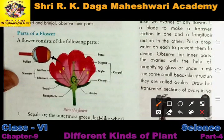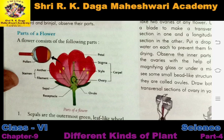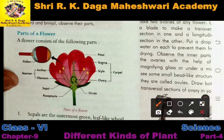Here a picture is given showing the parts of the flower. A flower consists of the following parts. As you can see, these red colored leaves are called petals. The colorful leaf-like structures of the flower are called petals.